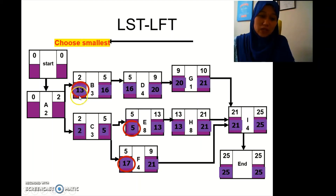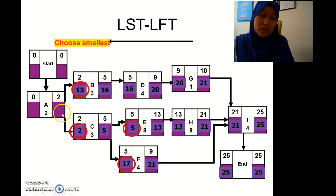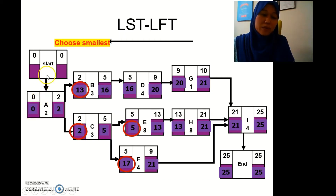Again we need to make a decision — going backward, choose the smallest. So 2 minus 2 is 0. Then 0, and at the start box 0 plus 0 is 0. We have completed the network diagram.